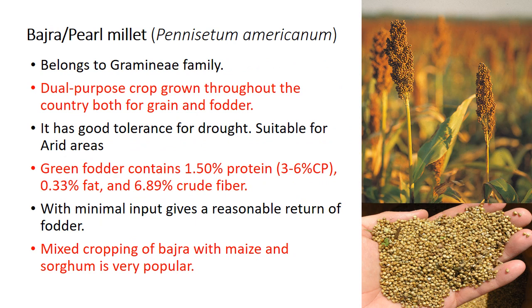Bajra (pearl millet) — Pennisetum americanum — belongs to the Gramineae family. It is a dual-purpose crop grown both for grain and fodder; millet grains are used for feeding different types of birds, and its fodder is equally good for animal feeding. It is drought-tolerant and most suitable as a fodder crop for arid areas. Its green fodder contains only 3 to 6 percent crude protein, but with minimal input it gives reasonable fodder returns. Mixed cropping of bajra with maize and sorghum is very popular in arid areas.